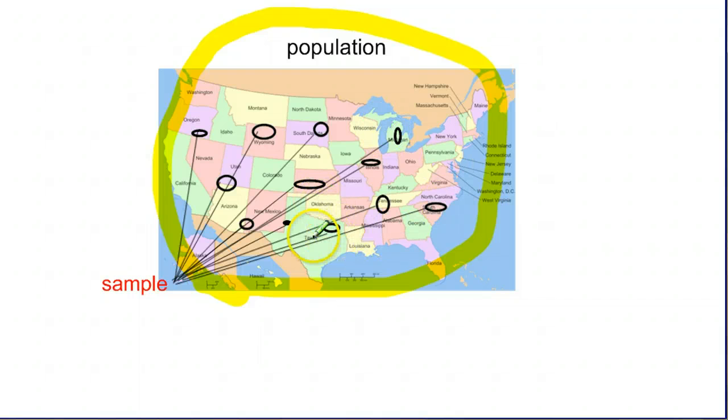So there's different techniques depending on how much you care about getting a super diverse group, or if you have ways of breaking down the population, let's say, by state.